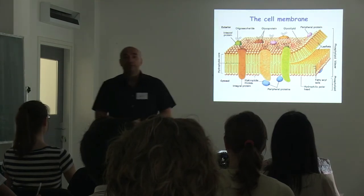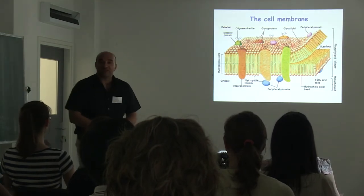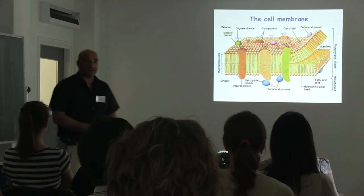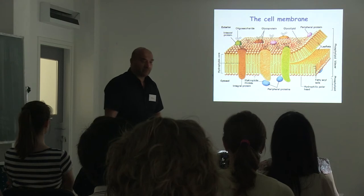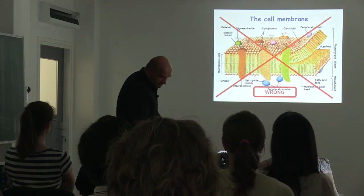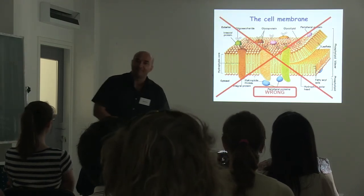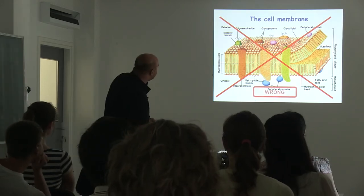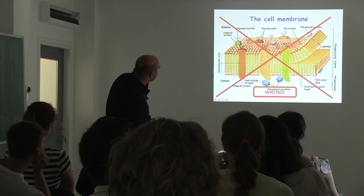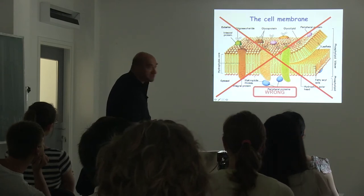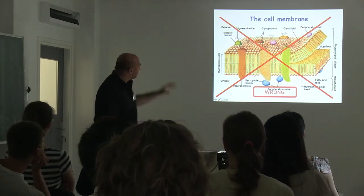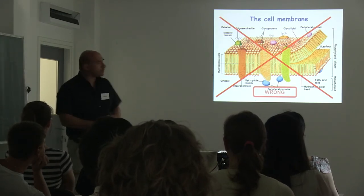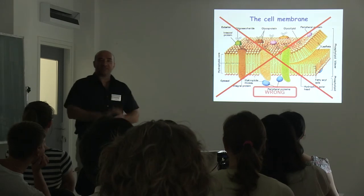I will start with a typical picture you have all seen before. This is a cell membrane the way you see it in the books. There is a tiny little problem with this picture — it's wrong. The wrong part are the glycans. You can see that there are tiny little hexagons added to proteins and lipids on this figure. You can assume that somebody during the revision of the figure said, 'Oh, where are the glycans?' and added some little hexagons.